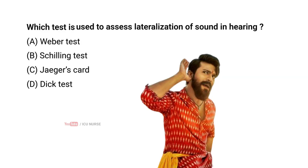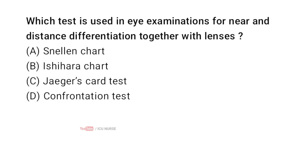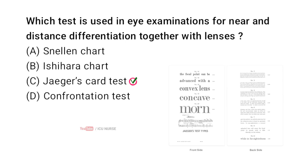Which test is used to assess lateralization of sound in hearing? Correct answer A: Weber test. Which test is used in eye examinations for near and distance differentiation together with lenses? Correct answer C: Jaeger's card test.